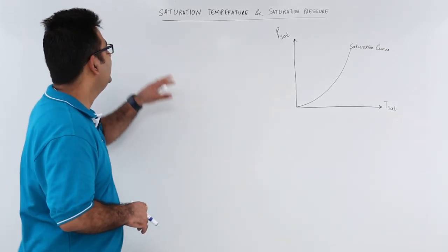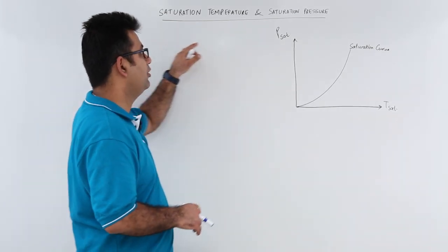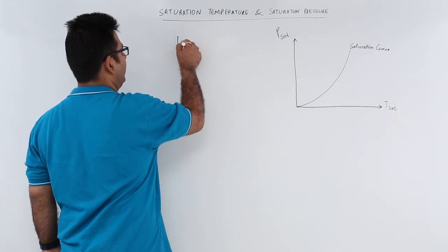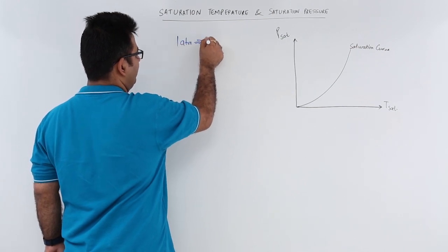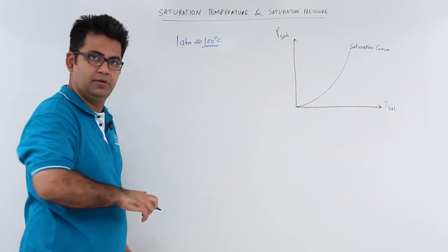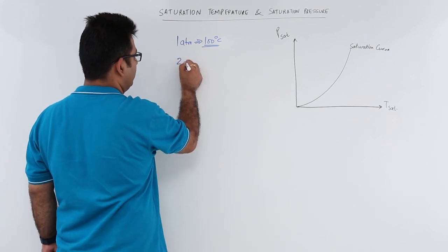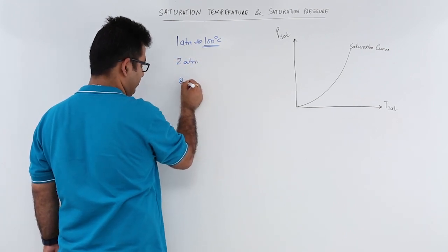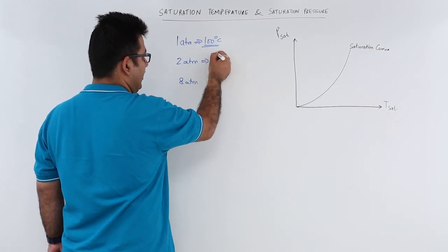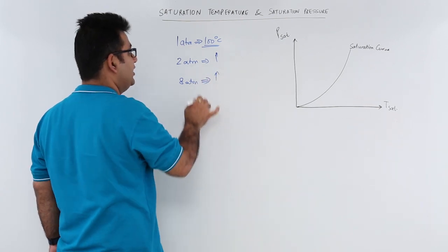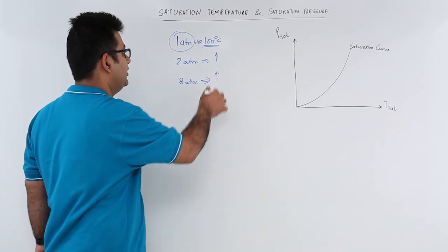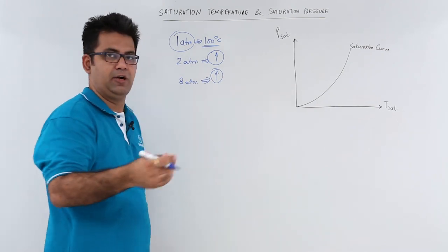In this video we will talk about saturation temperature and saturation pressure. At atmospheric pressure, that is 1 atm, the boiling point of water is 100 degrees Celsius. If I increase this pressure, let us say to 2 atm or 8 atm, this temperature of boiling would also increase. So as you increase the pressure at which boiling takes place, the temperature will also start to increase.